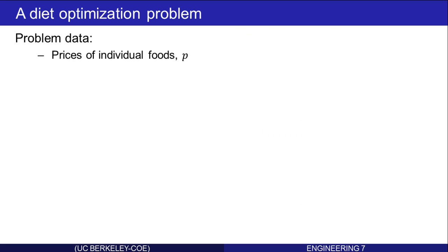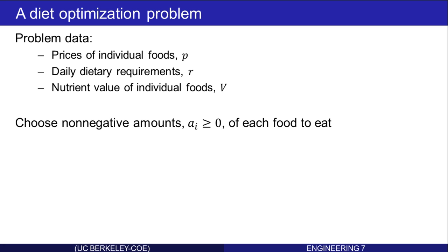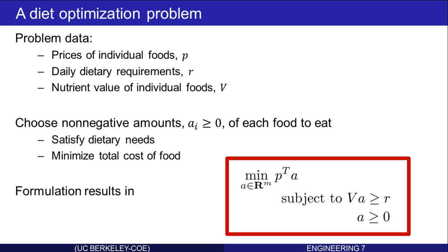The problem data is the prices of the individual foods as a vector, the dietary requirements of the nutrients as a vector, and the nutrient value of individual foods as an array. We need to choose non-negative amounts of each food to eat. To satisfy the dietary needs, that means exceed the daily requirements, but minimize the total cost of the food. This results in a formal optimization written like this. There's a linear cost function.